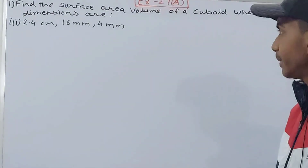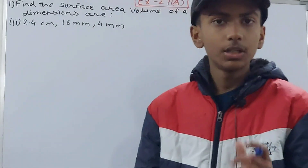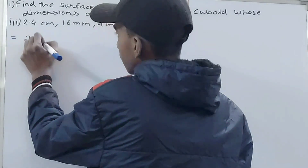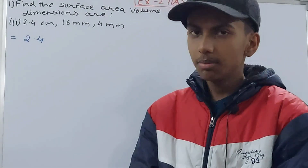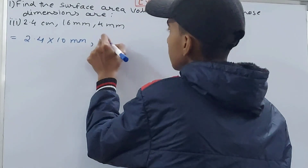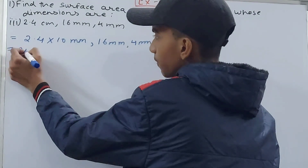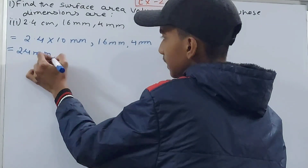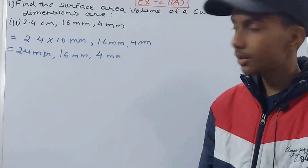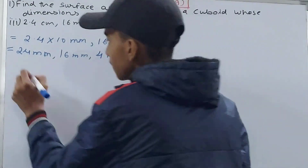Now the last part has dimensions: 2.4 centimeters, 16 millimeters, and 4 millimeters. Again we have two different units — centimeters and millimeters. I will convert centimeters into millimeters: since 1 centimeter = 10 millimeters, 2.4 cm × 10 = 24 millimeters. So all three dimensions are now 24 mm, 16 mm, and 4 mm.